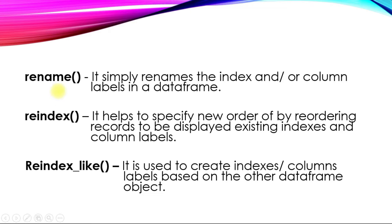First is rename. It simply renames the index and/or column label in a DataFrame. If I have an index or column label — that is, a column name or index name — that I want to change, I can use rename. It will just give another name to the column or the rows.